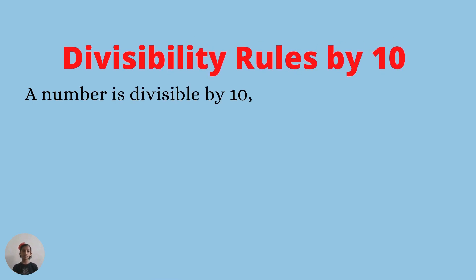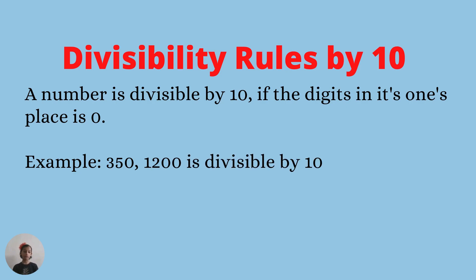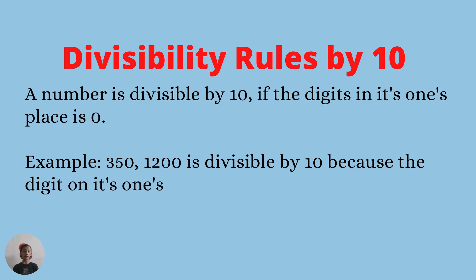Divisibility rule of ten: a number is divisible by ten if the digit in its ones place is zero. Example: three hundred and fifty, or one thousand two hundred, is divisible by ten because the digit in its ones place is zero.